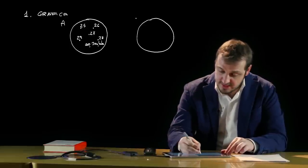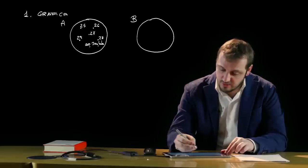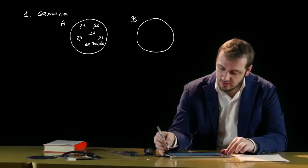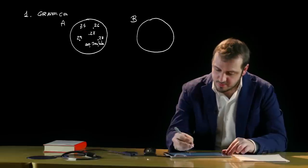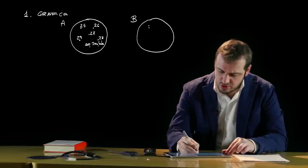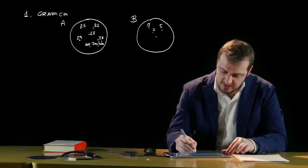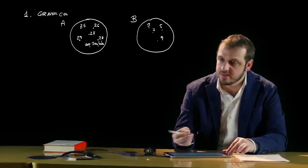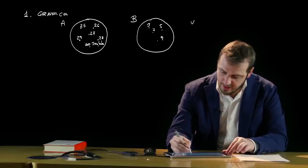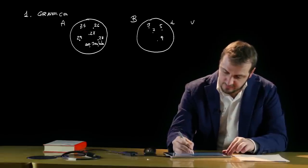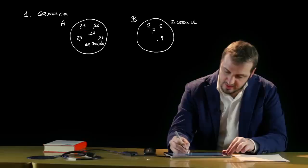L'insieme B invece è caratterizzato dai numeri dispari compresi tra 2 e 10: al suo interno avremo il numero 3, il numero 5, il numero 7 e il numero 9. Questa è la prima rappresentazione tramite i diagrammi di Eulero-Venn.